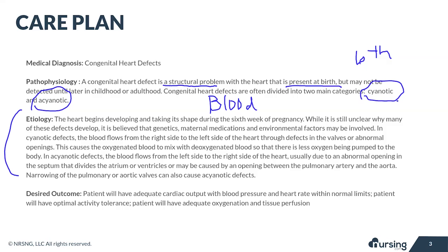We've got a lot of really good information here that goes into great detail, but here it is in two quick sentences. Heart defects that cause an increase in pulmonary blood flow or allow blood to mix are going to be less likely to cause cyanosis. And heart defects that cause a decrease in pulmonary blood flow or obstruct blood flow are more likely to cause cyanosis.